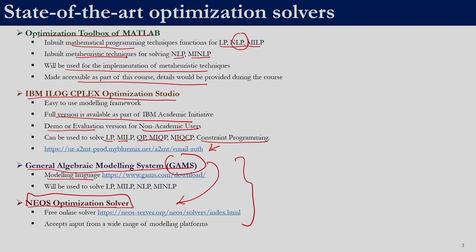Once the problem is solved, we can get the results over email or they will be displayed on your browser when you submit the problem. GAMS can be used for linear programming, mixed integer linear programming, non-linear programming, and mixed integer non-linear programming. We will be using the NEOS optimization solver only for GAMS, but if you visit neoserver.org you will see that it accepts input from a wide range of modeling platforms.